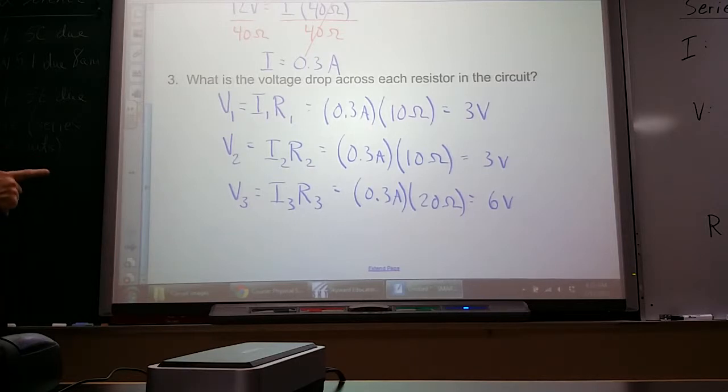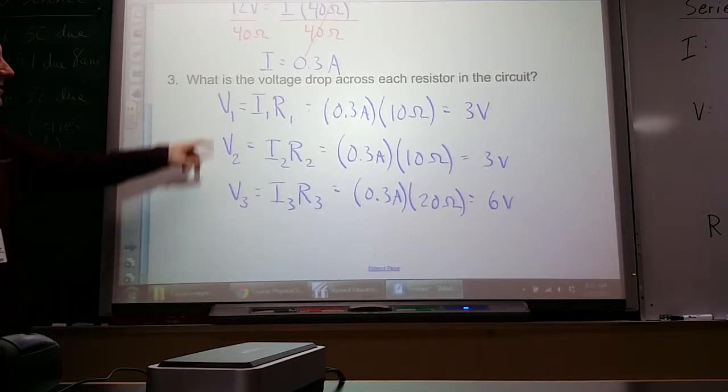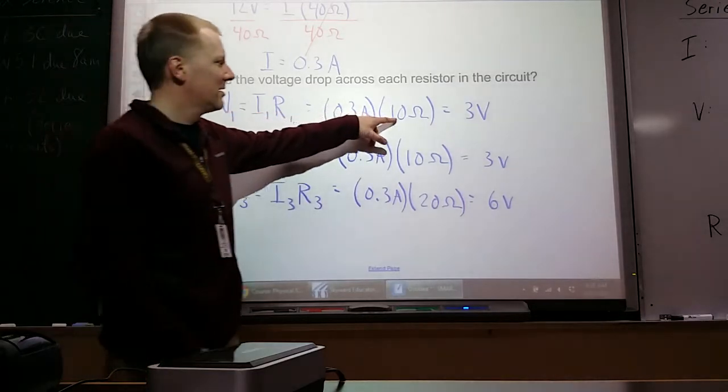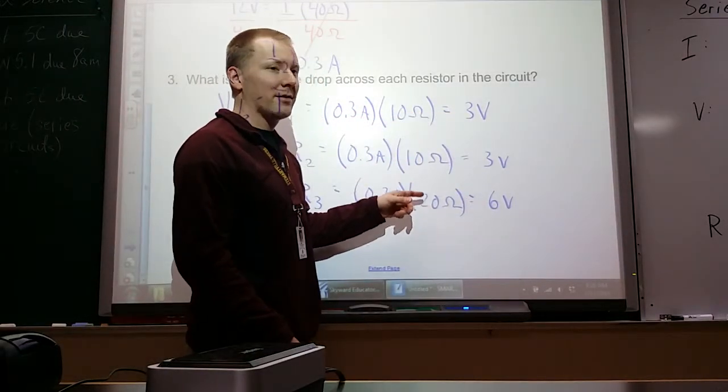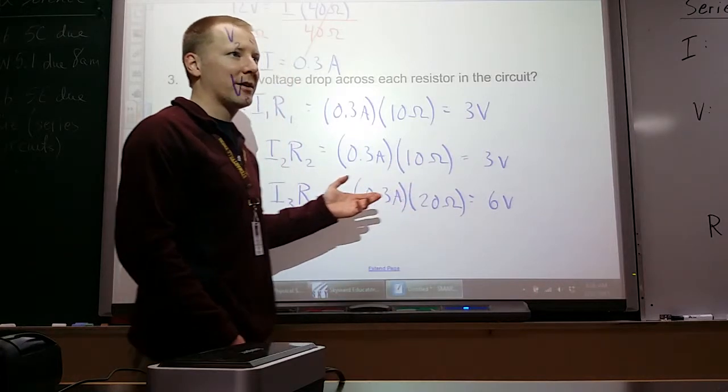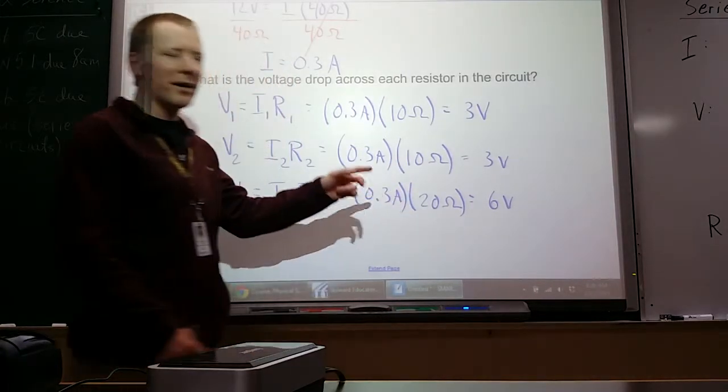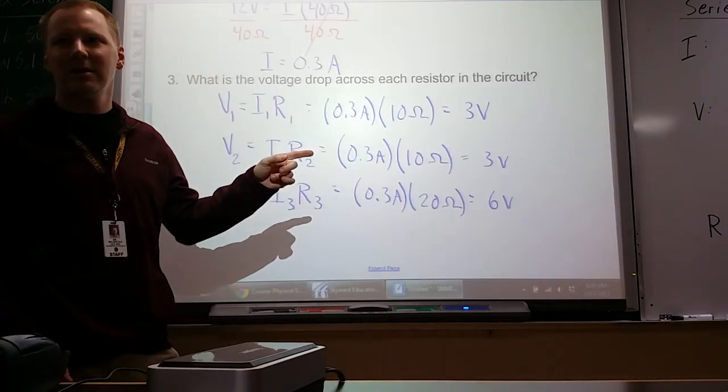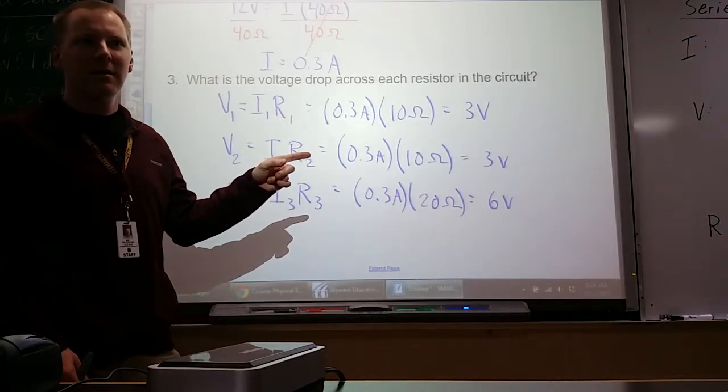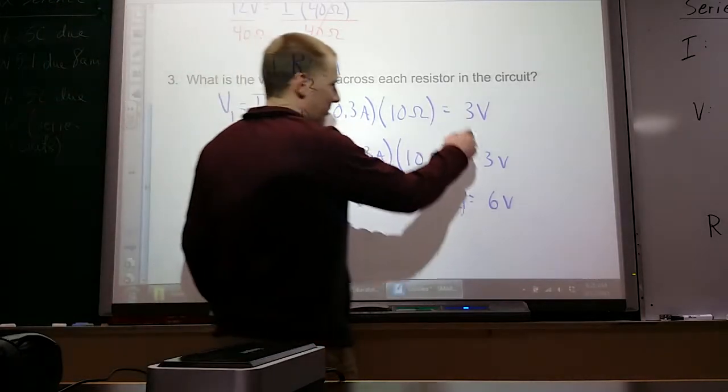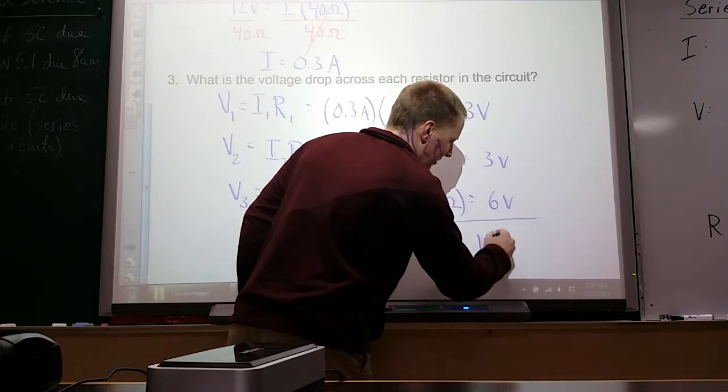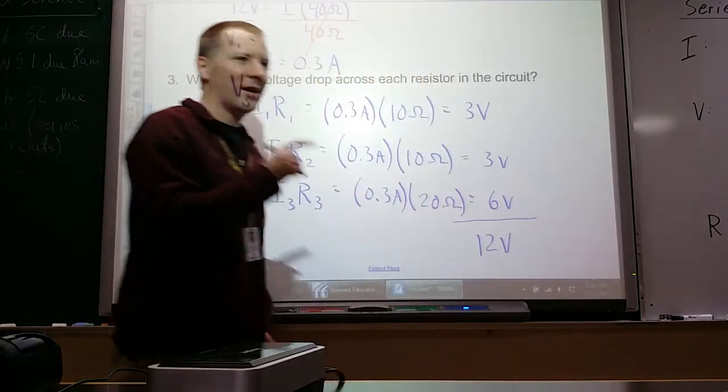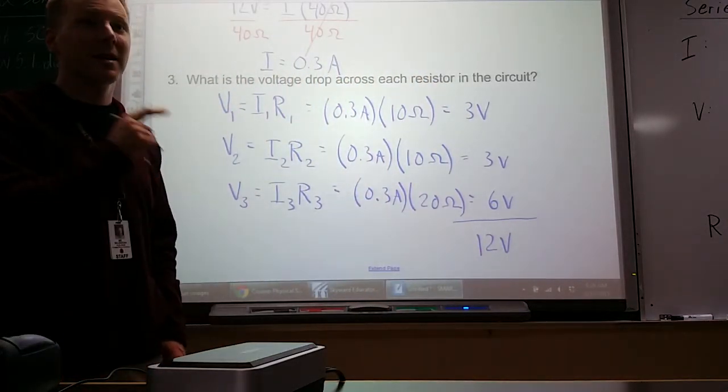So we have two things in our rules on this. Notice first off that the higher the resistance, 10 ohms versus 20 ohms, the greater the voltage drop. That's how much energy is being lost by electrons. But what else do we know about the voltages here? They equal 12. 3 plus 3 plus 6, 12 volts. That's the same as our battery that was the source, and it has to be.